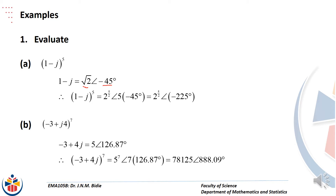Then the fifth power of (1 − j) will be the fifth power of the square root of 2, cis of 5 times the argument. Remember that r is raised to the same power as n and n multiplies theta.